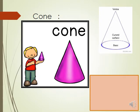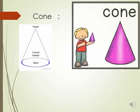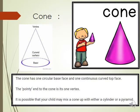The cone has two faces, one vertex, and one edge. The cone has one circular base face and one continuous curved top face. The pointy end of the cone is its one vertex. Note that children may mix a cone up with a cylinder or a pyramid.